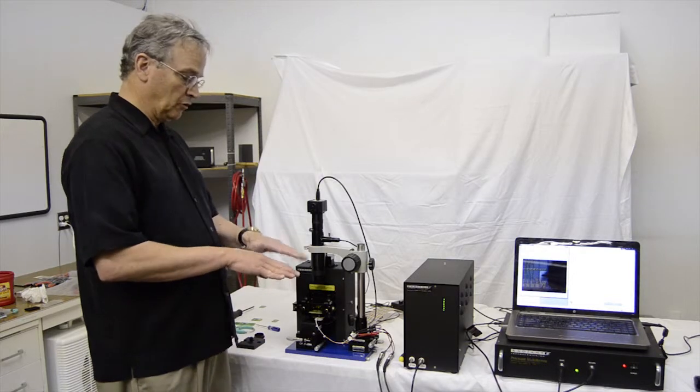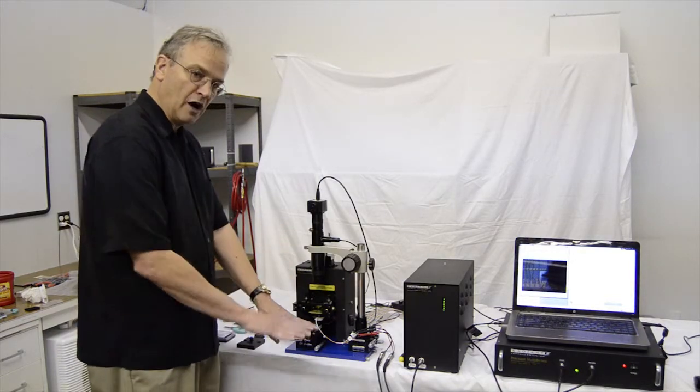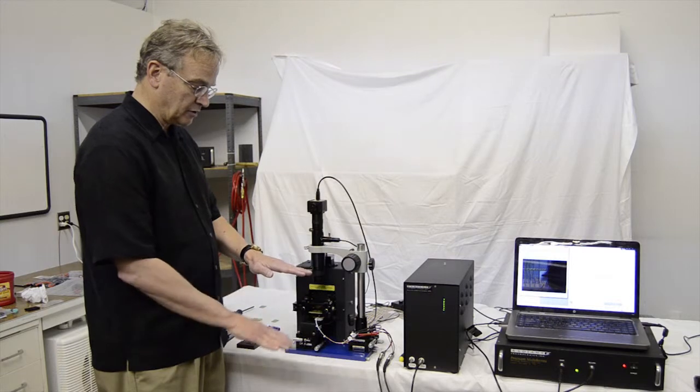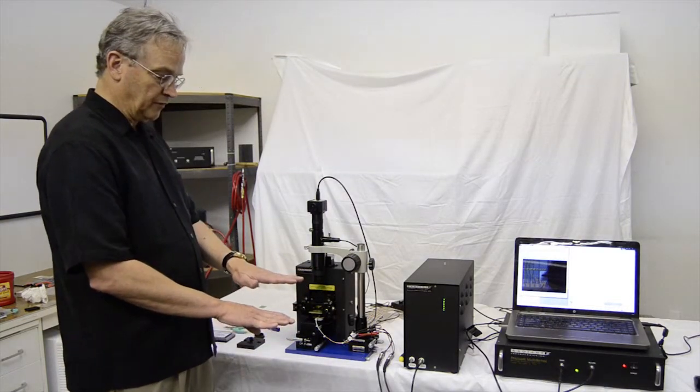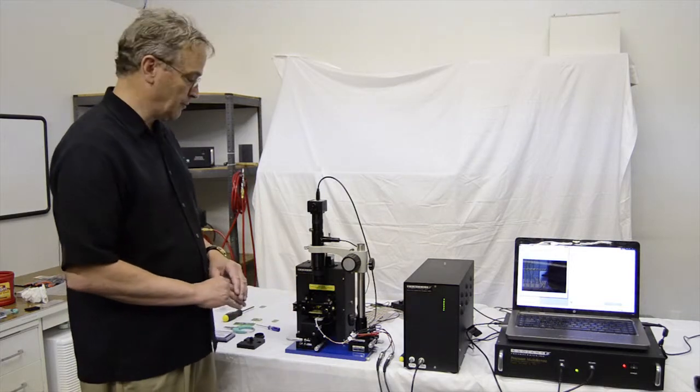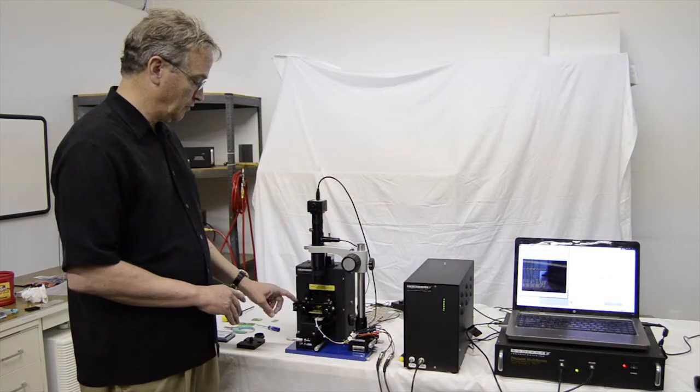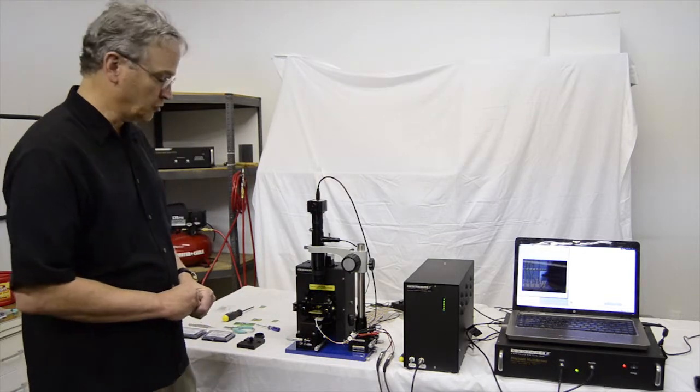At each step, it'll take the chuck and move it up and scan it. It'll keep repeating this until the cantilever touches the surface of the sample. At that point, the e-box will see the laser spot on the photo sensor move.